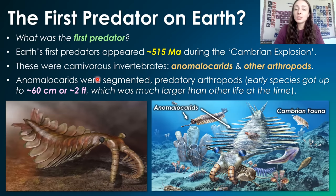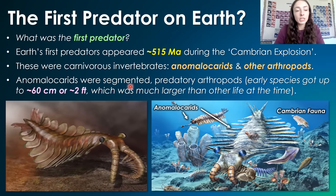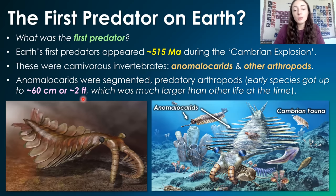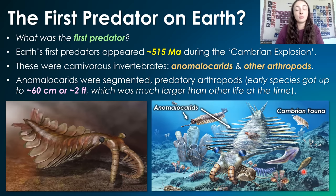They were segmented predatory arthropods, and early species of anomalocaridids got up to 60 centimeters, or two feet, in length, which was much larger than most other organisms at the time, which made them pretty easily become apex predators.